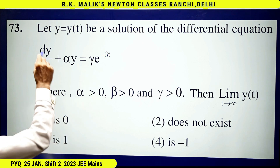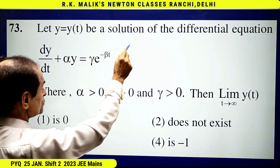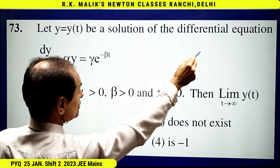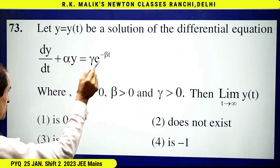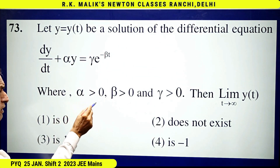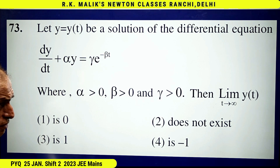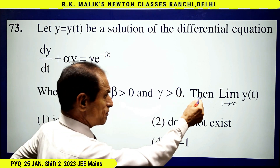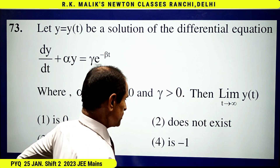In this question, it is given that let y be a solution of the differential equation, where alpha, beta, and gamma are all greater than zero. Then find the limit as t tends to infinity of y(t) — you have to find the correct choice.